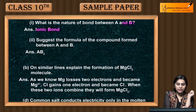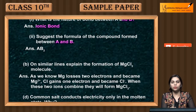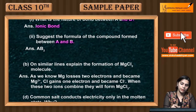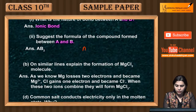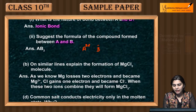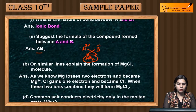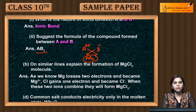Next, suggest the formula of the compound formed between A and B. A loses two electrons, so it becomes A²⁺. B gains one electron, so it becomes B⁻. You cross-multiply the valences, so the formula of the compound between A and B is AB₂.